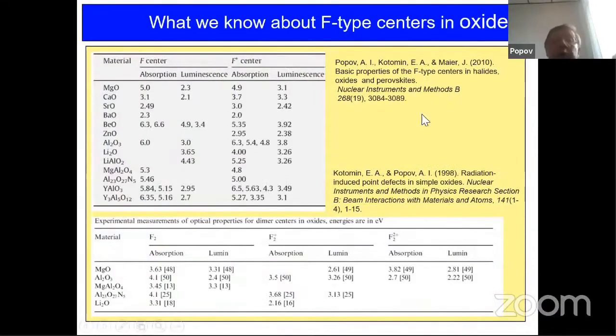And these two tables just show you a compilation of the data for F and F+ centers in binary and complex oxides. F center is oxygen vacancy with two electrons and F+ center is oxygen vacancy with one electron. And only for a few binary and complex oxides is information about complex centers available in literature. But even there are a lot of controversial results, which actually recently were checked and some data were unfortunately not confirmed.